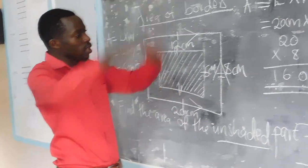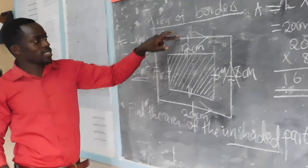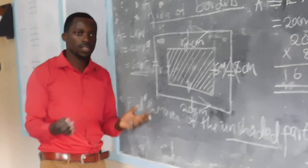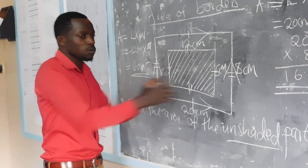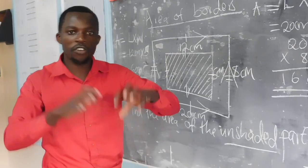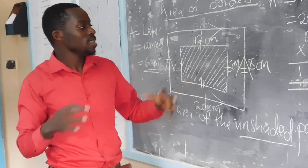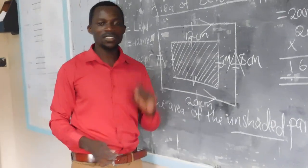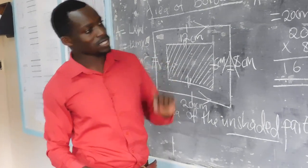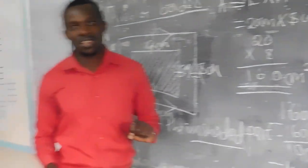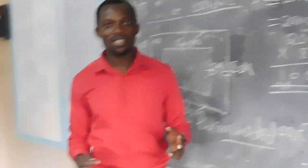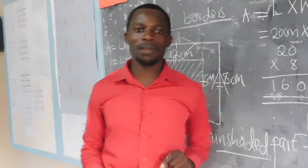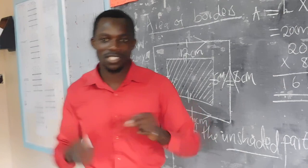Just to take you through the whole process again: first, find the area of the bigger rectangle; then find the area of the smaller rectangle; then find the difference of the two areas — that will be your answer for the area of the borders. Thank you so much for listening. We will meet next time to do more examples. Please remember to do some exercises on the same.